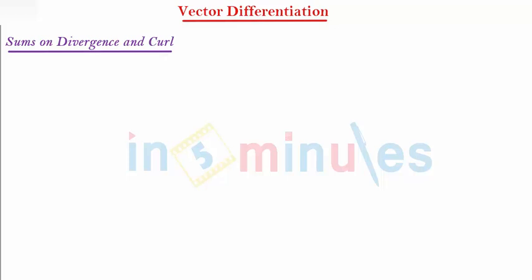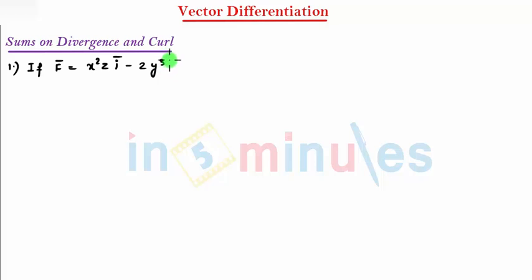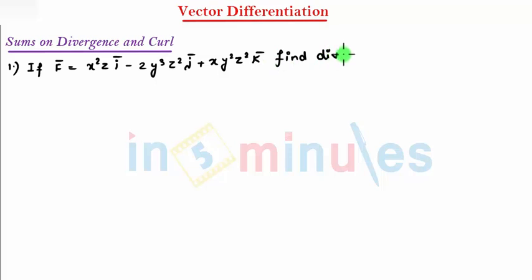Hello students, welcome to In 5 Minutes. I will be solving sums on divergence and curl. My first example is: if f̄ is given as the vector point function x²z î minus 2y³z² ĵ plus xy²z² k̂, find div of f̄ and curl of f̄.